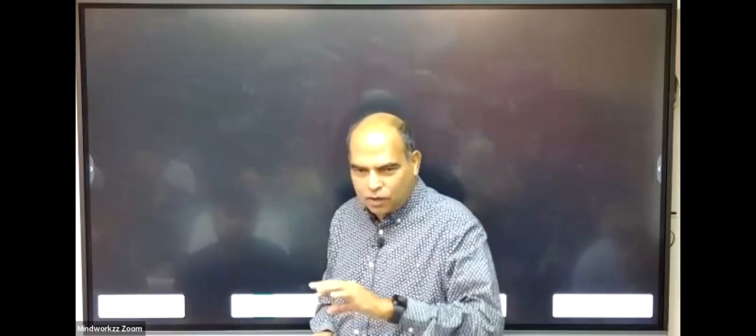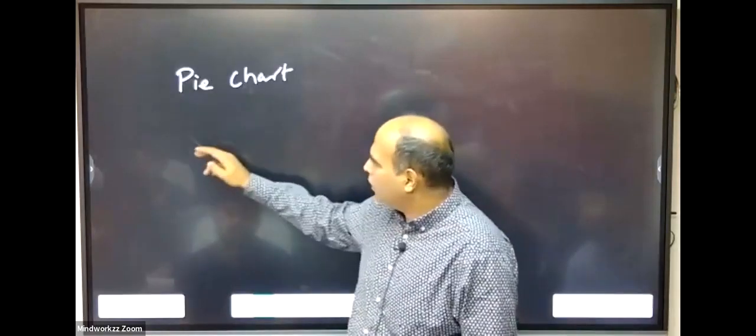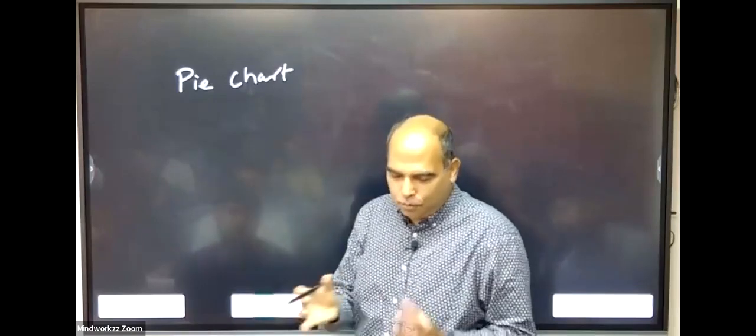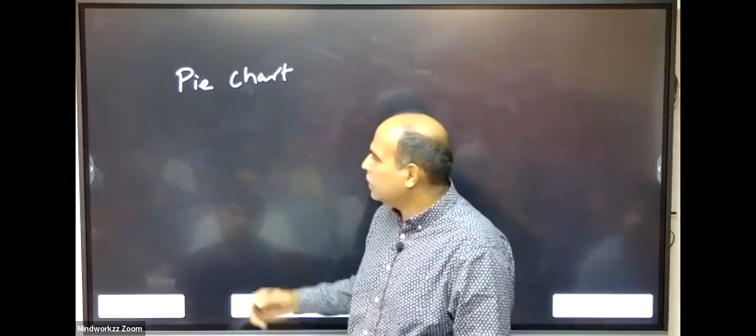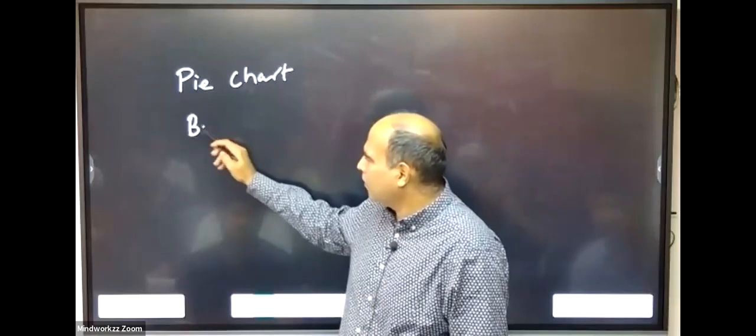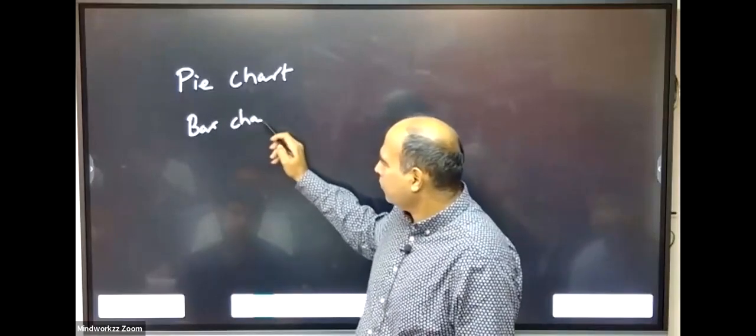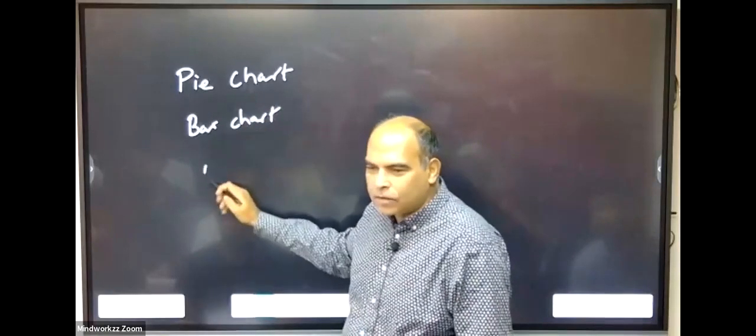If you see the complete pedagogy and study style for most people in data and prediction, and you can look at this across institutes, people start putting DI into boxes and chapters. Pie chart is one chapter, bar chart is another chapter. Tables is the third chapter.